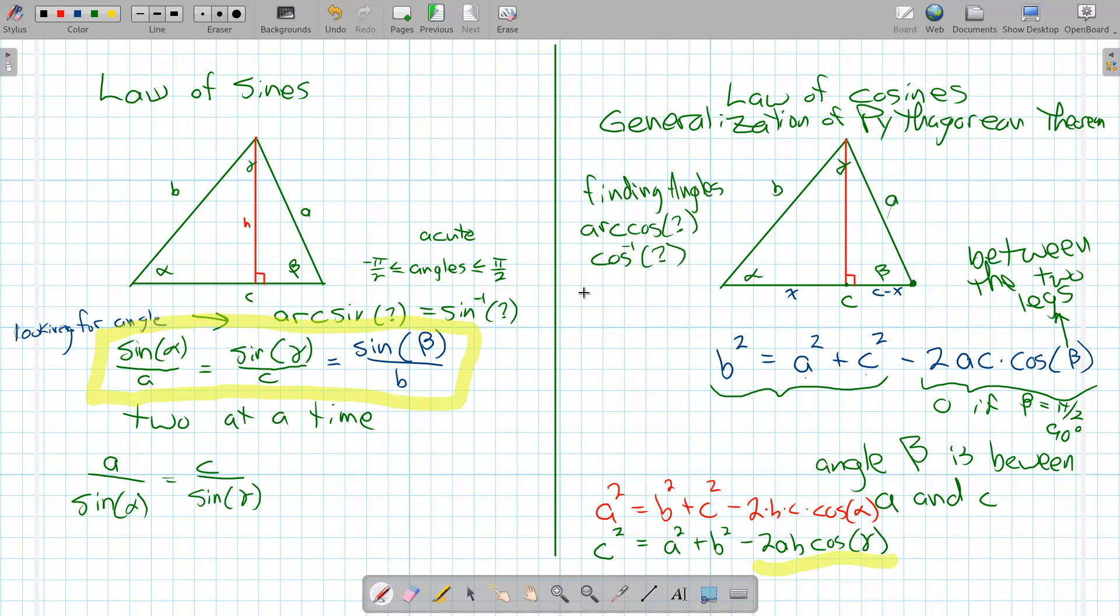And the cool thing about the cosine inverse is it looks for angles between zero and pi, between zero and 180. So it finds pretty much any angle I need, acute or obtuse.